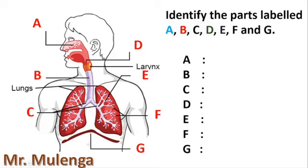We also have the parts that have been named. We have the lungs right here, the parts labeled larynx right here, and the part labeled G down here. Let us now look at the question. Identify the parts labeled A, B, C, D, E, F, and G.